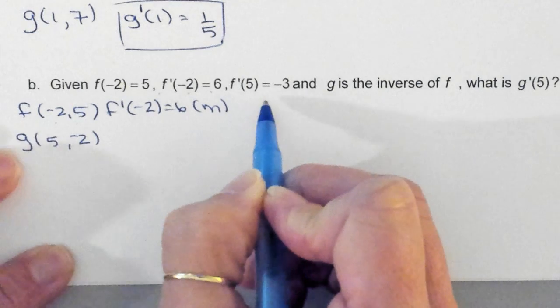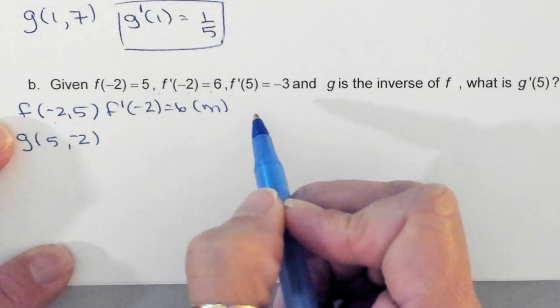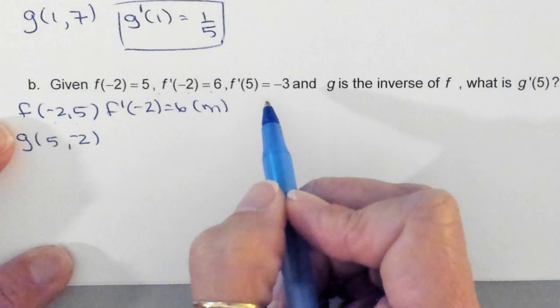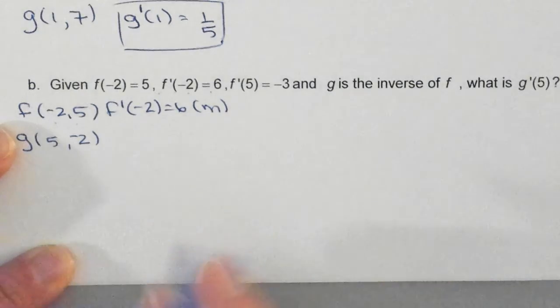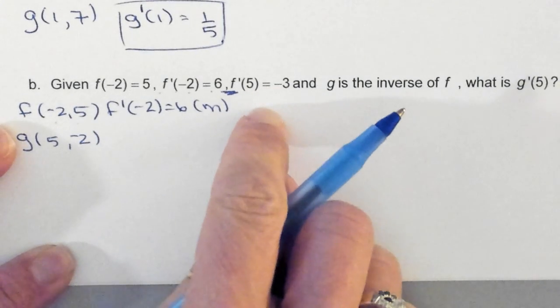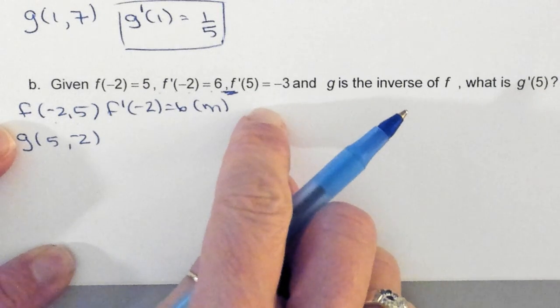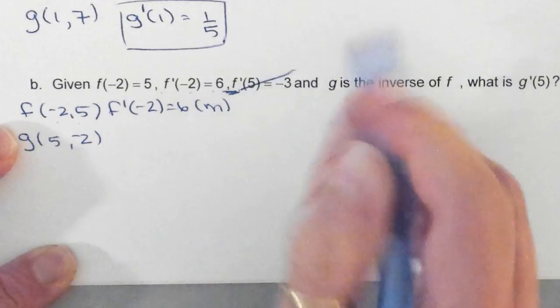F prime of 5 is equal to negative 3. F prime of 5, do I have a point at 5 comma something? For f? No, I do not. I have it for g, but this says f. Do I need this? No, this is a slope at another point somewhere on the graph that I know nothing about. Does everyone see what I'm saying? So I don't need this.